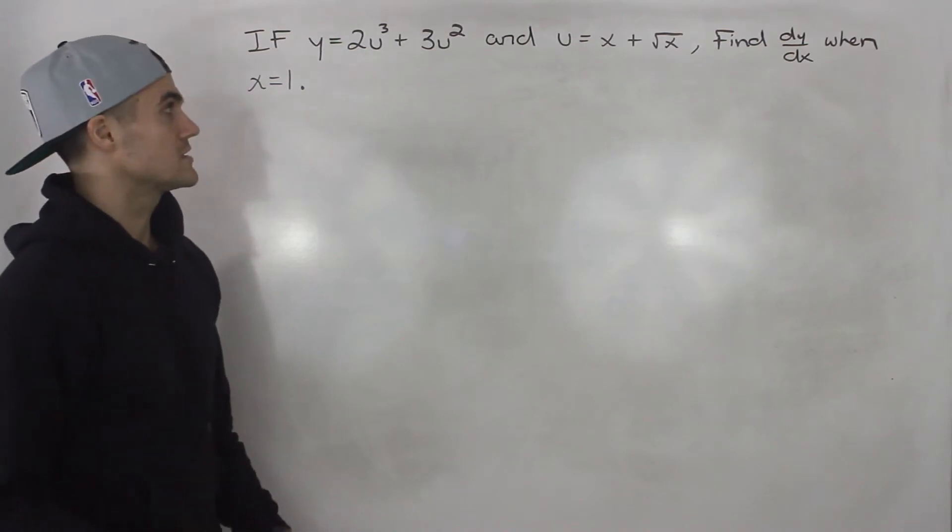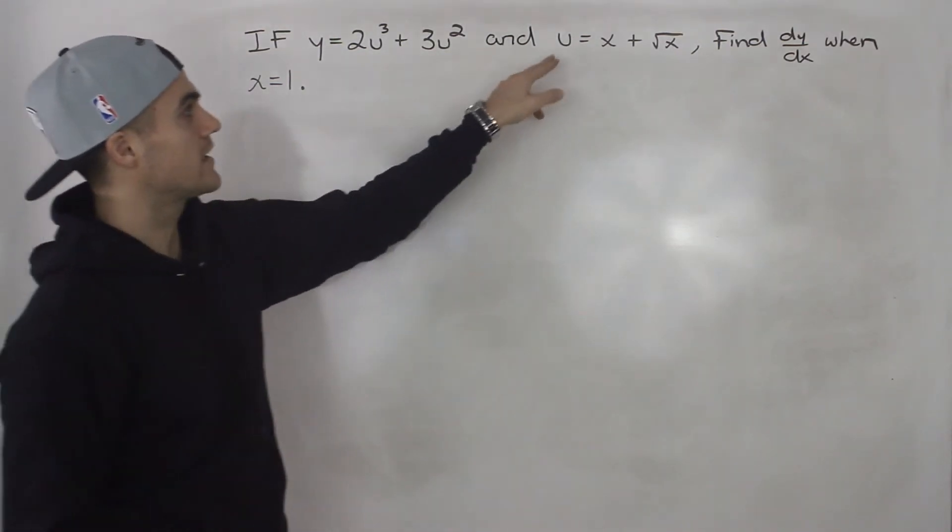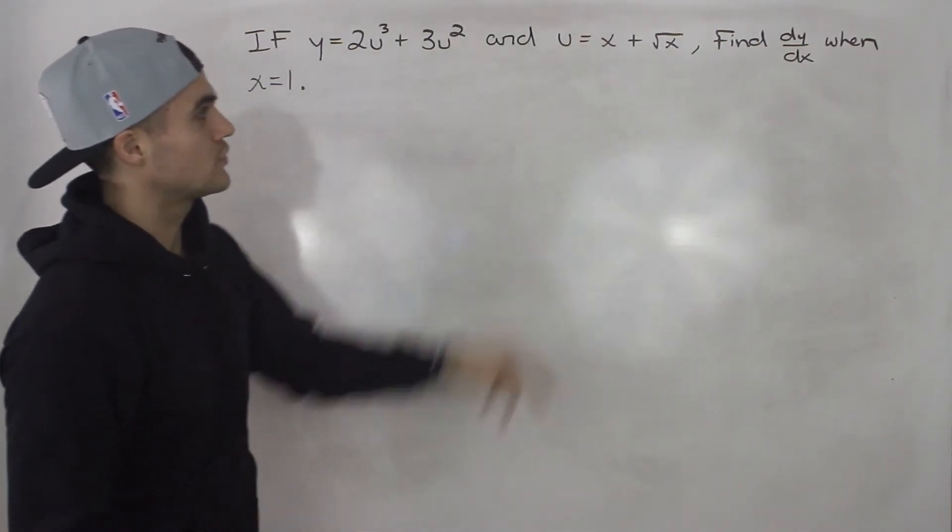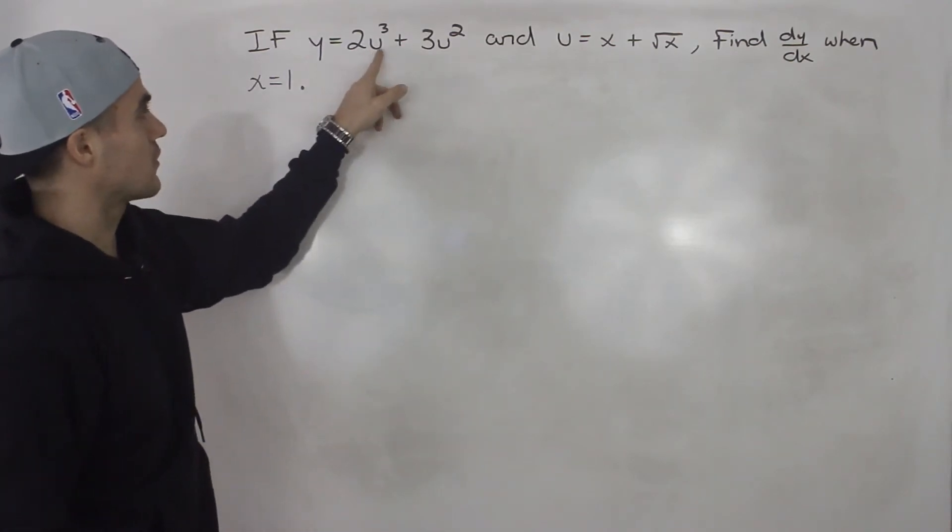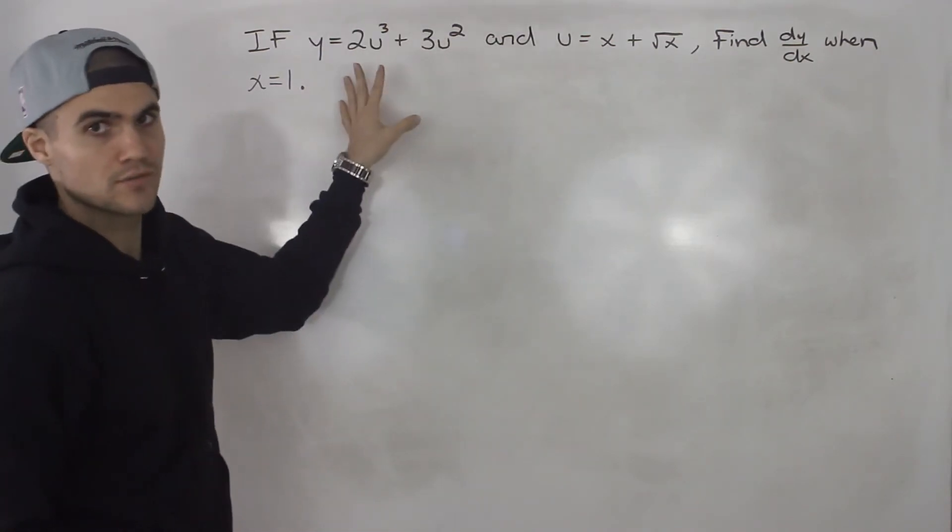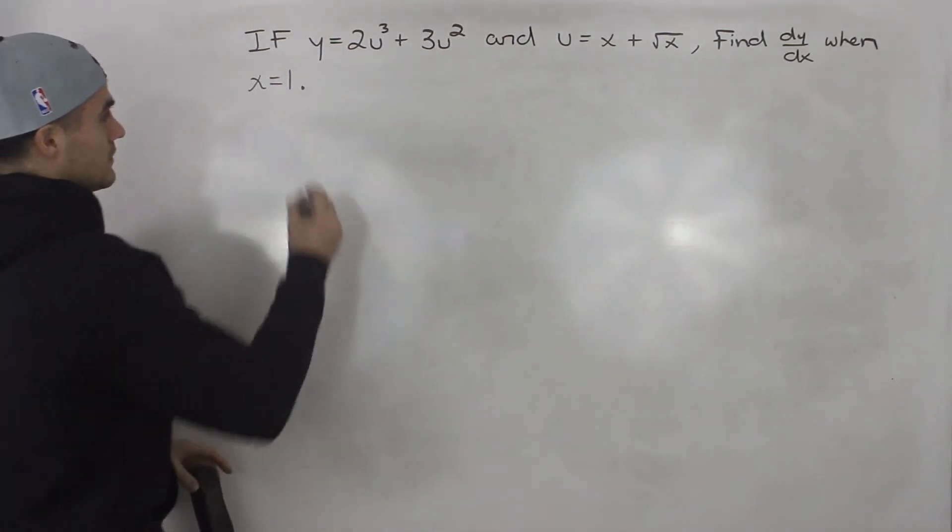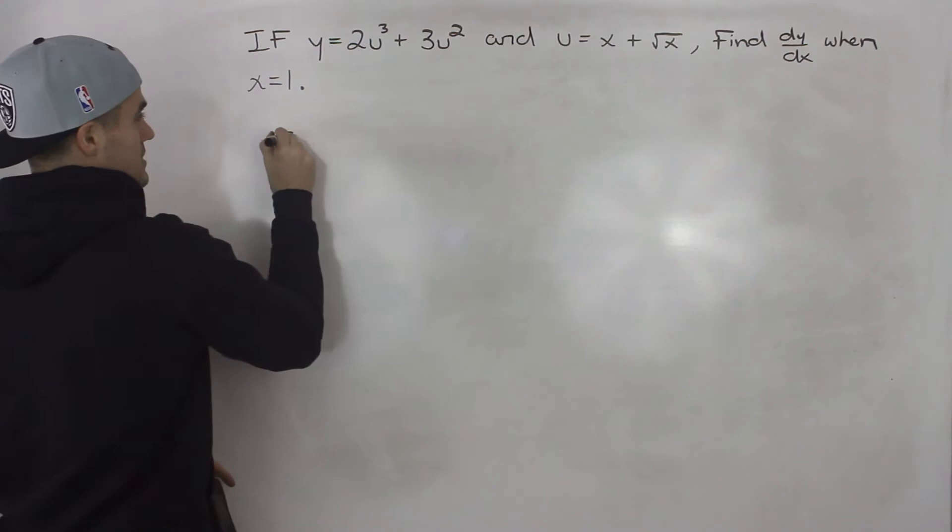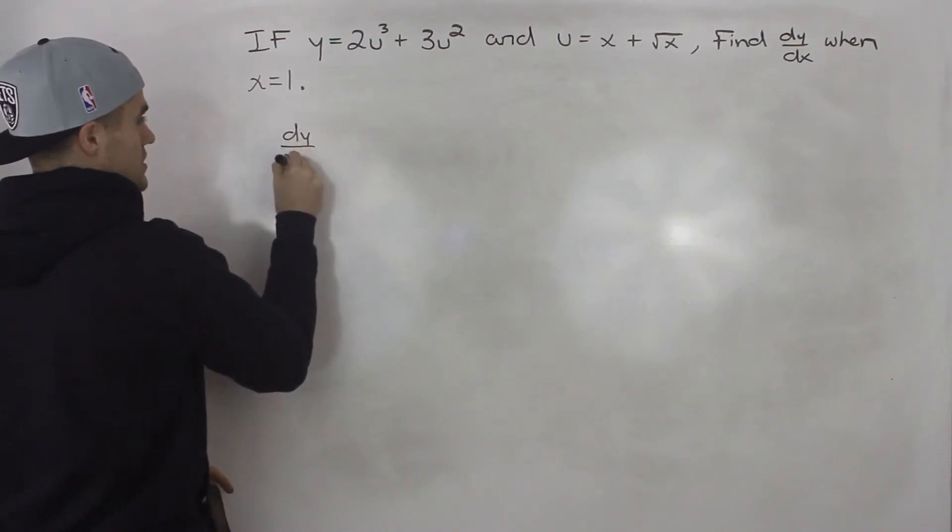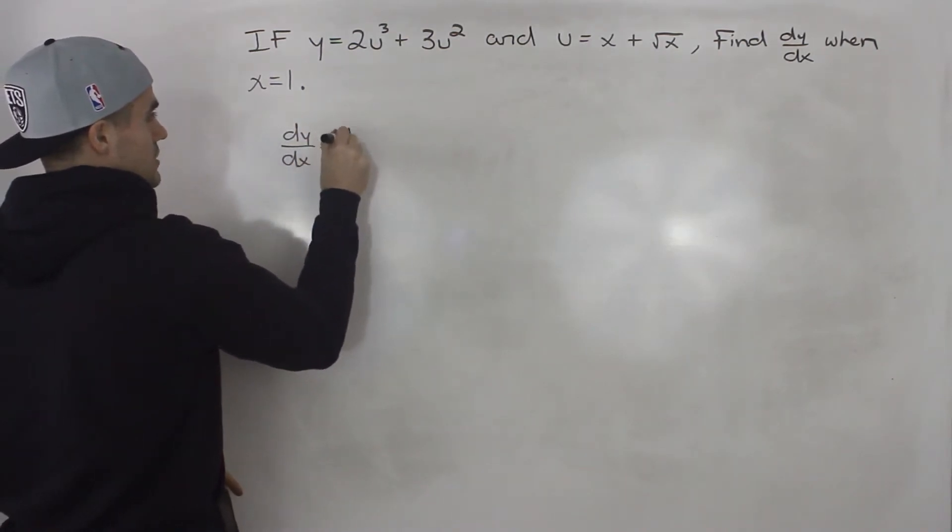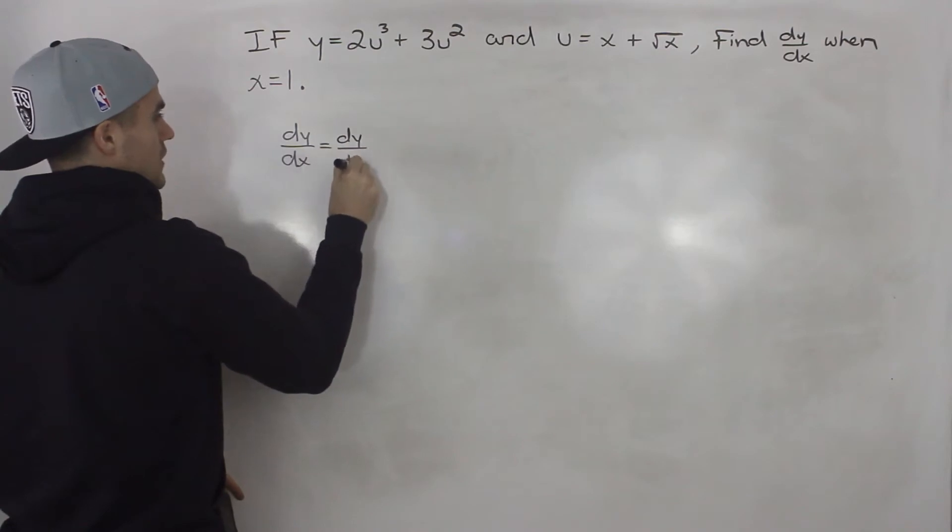Now, a couple of different ways you can do this. You can sub in this expression for u, x plus square root of x, for all these u's here, and then take the derivative of that big function. However, in my opinion, because we're given two separate functions like this, it's easier to just use Leibniz notation. We went over that in the lecture videos.